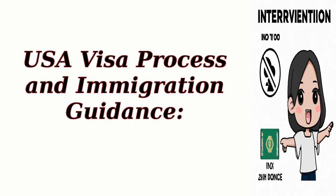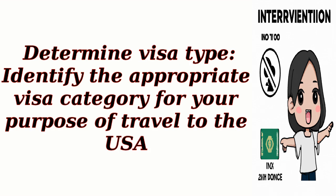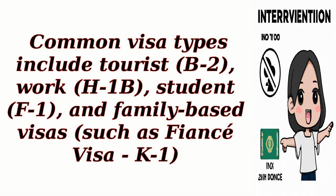USA visa process and immigration guidance. Determine the visa type — identify the appropriate visa category for your purpose of travel to the USA. Common visa types include tourist, B2, work, H-1B, student, F1, and family-based visas such as the fiancé visa, K1.